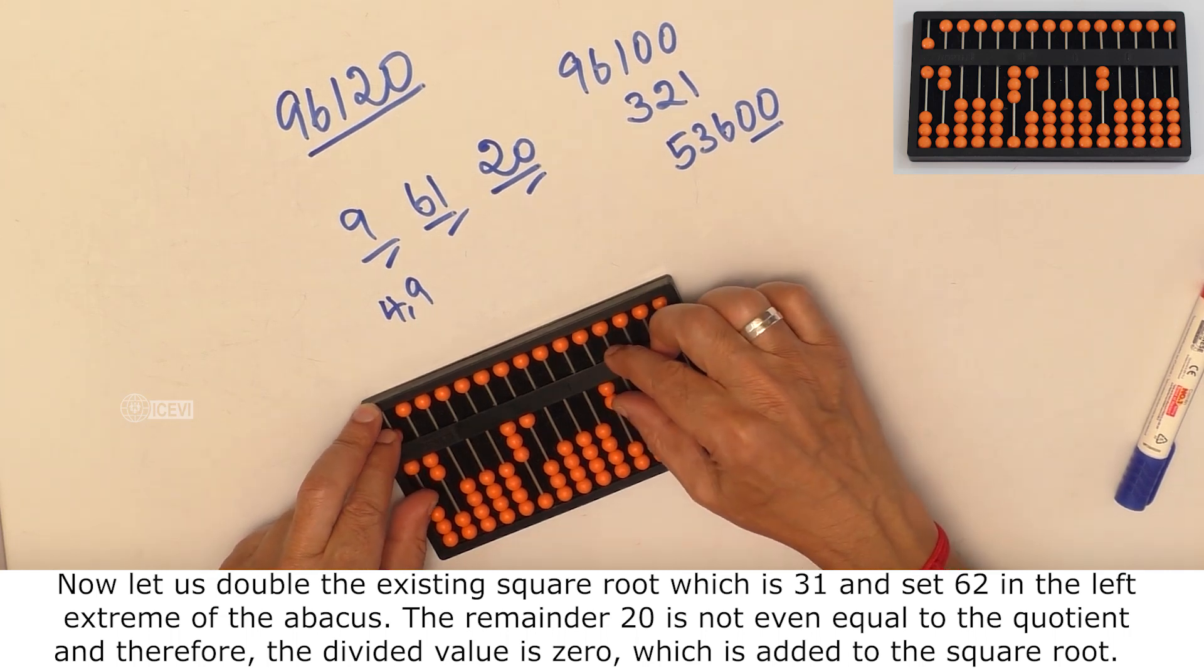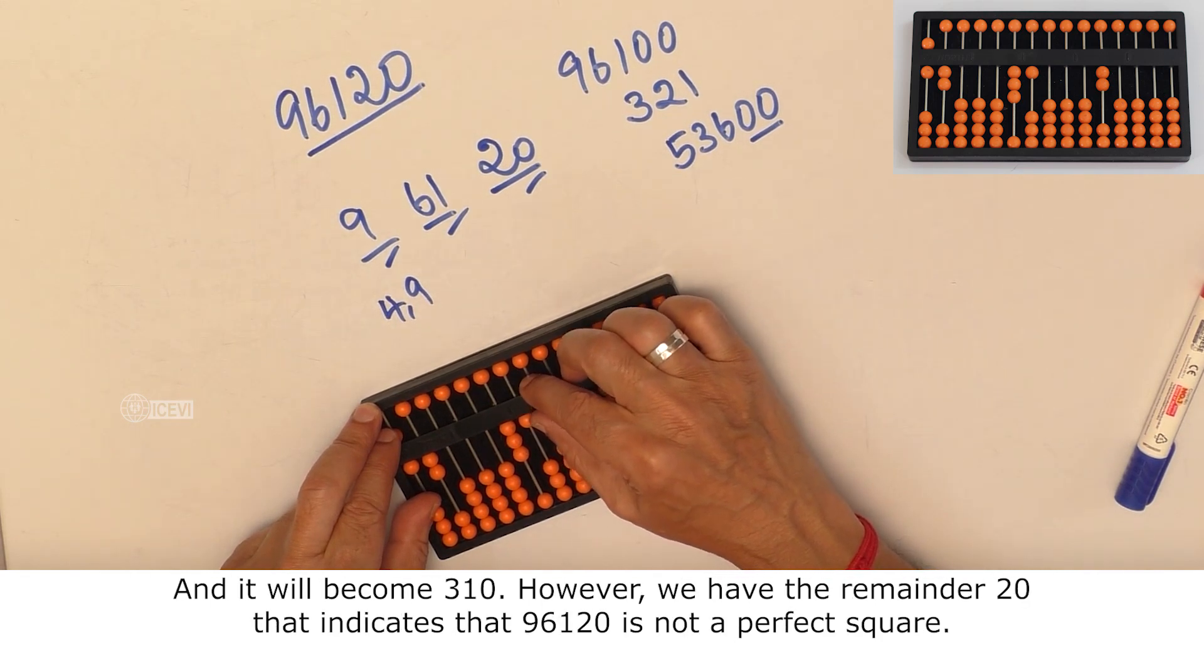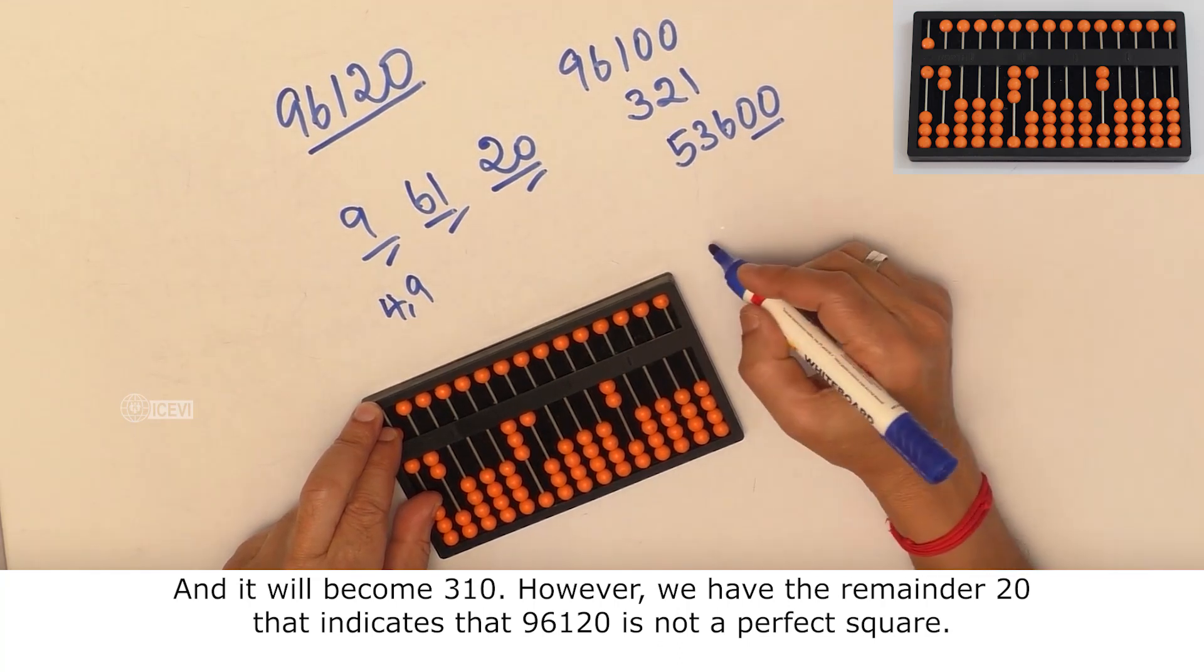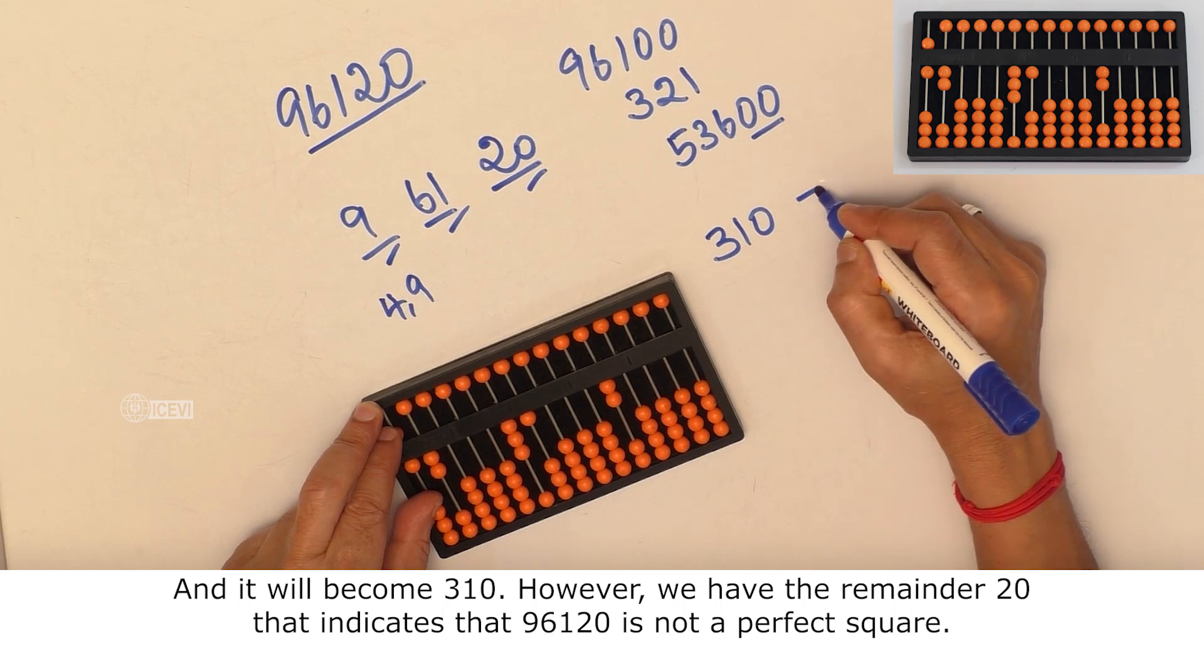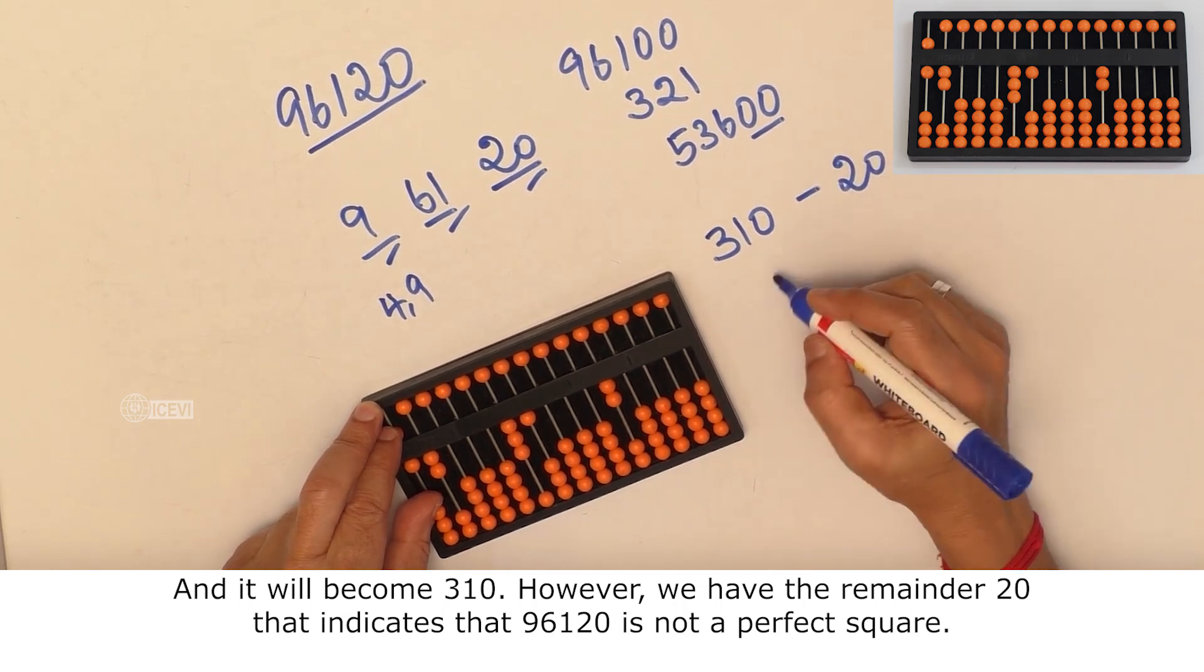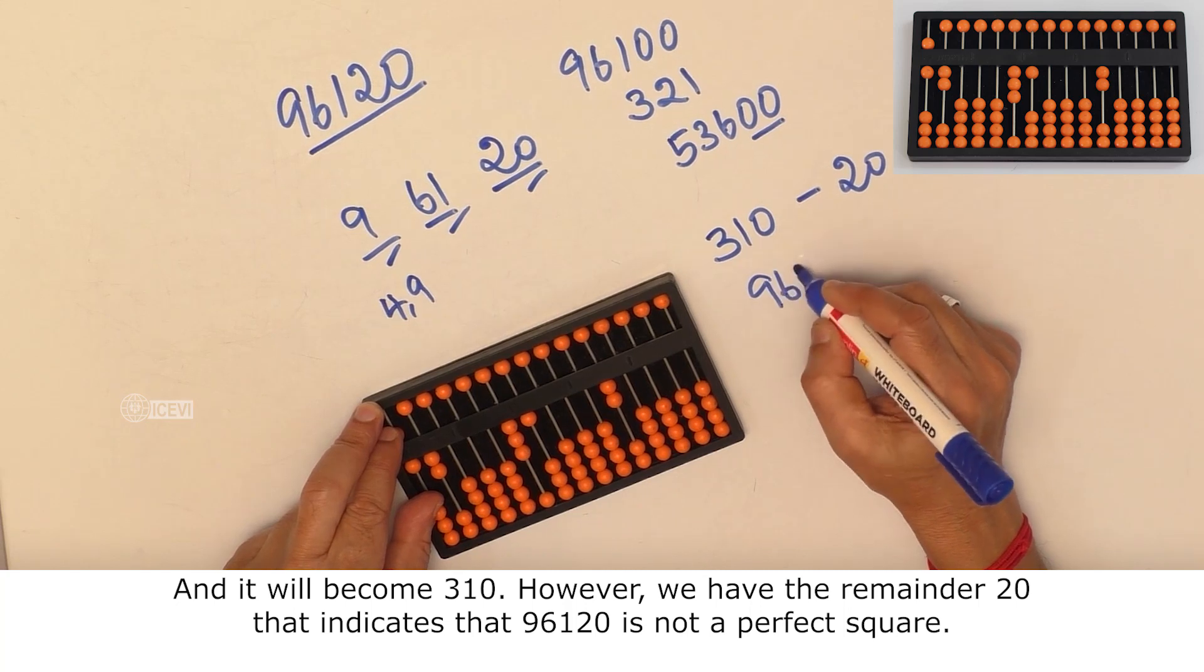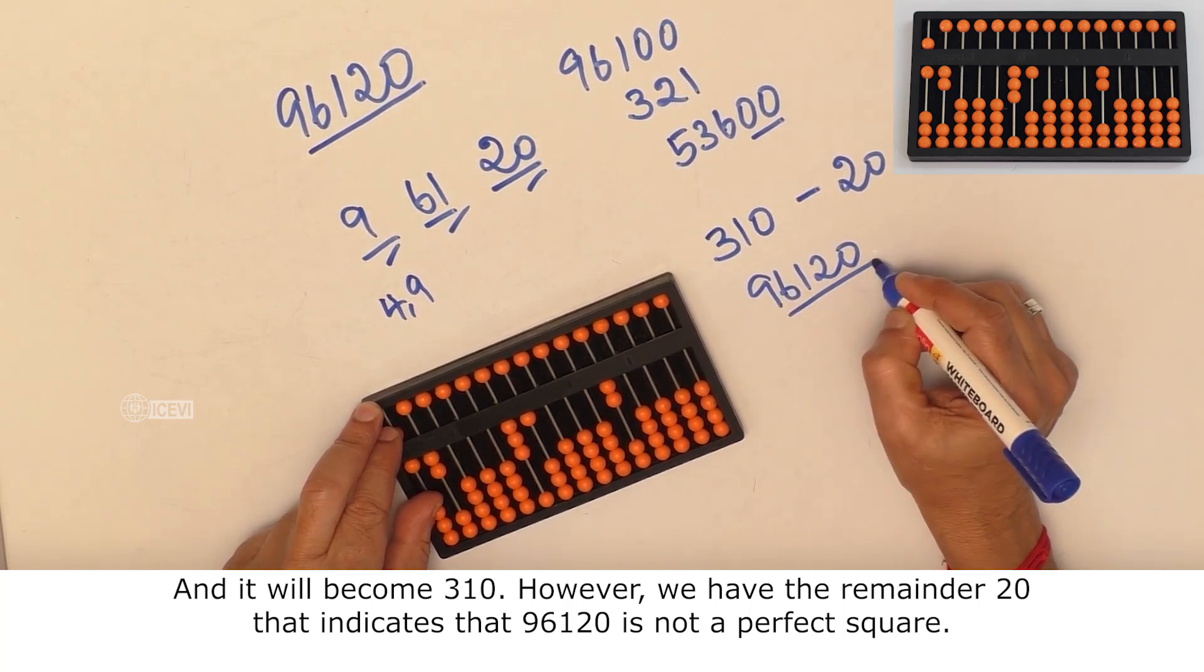the divided value is 0, which is added to the square root, and it will become 310. However, we have the remainder 20. That indicates that 96120 is not a perfect square.